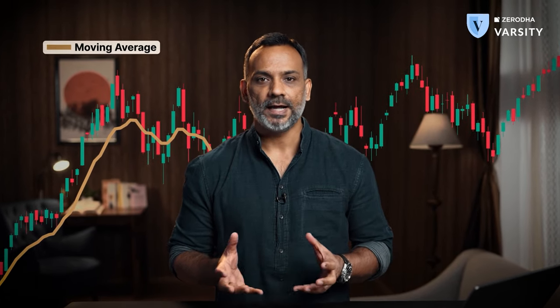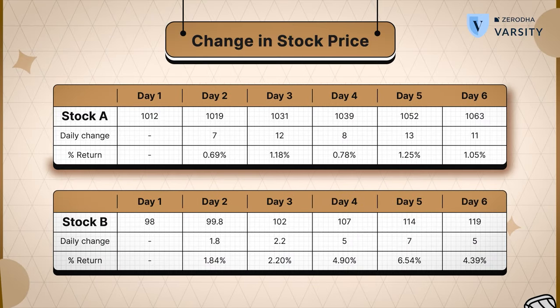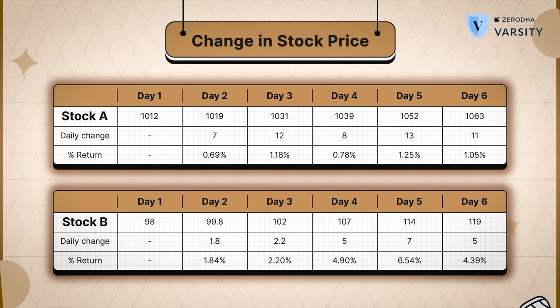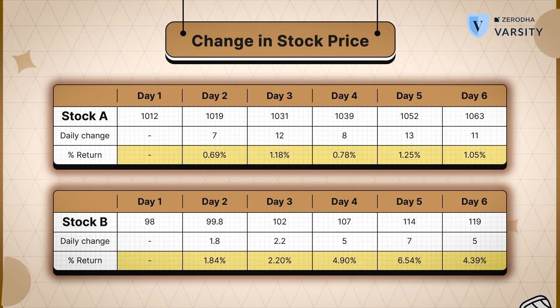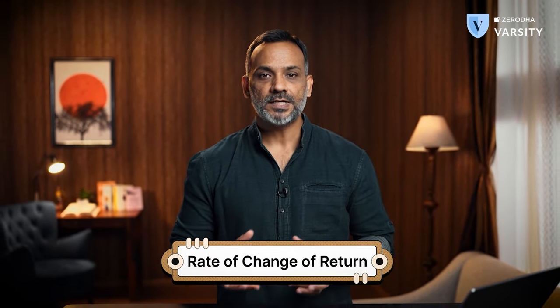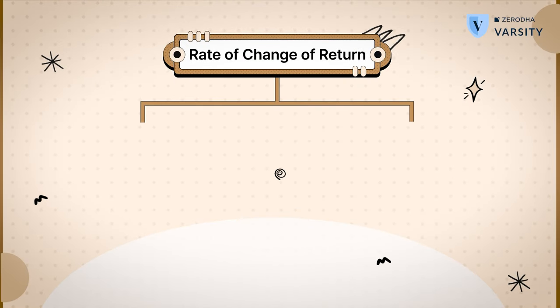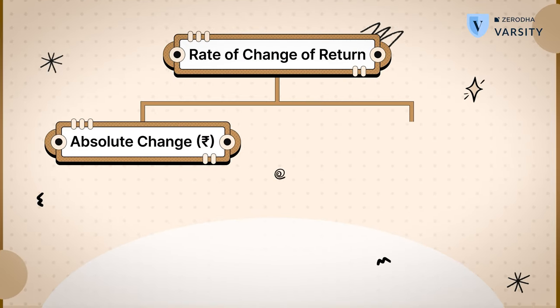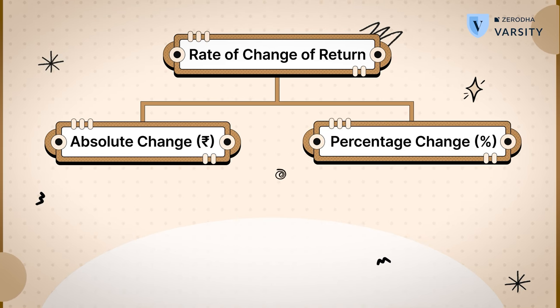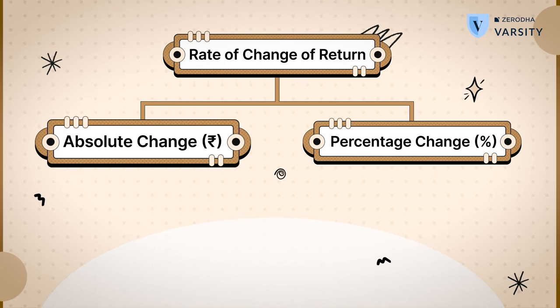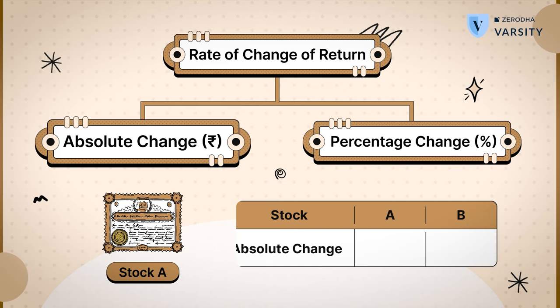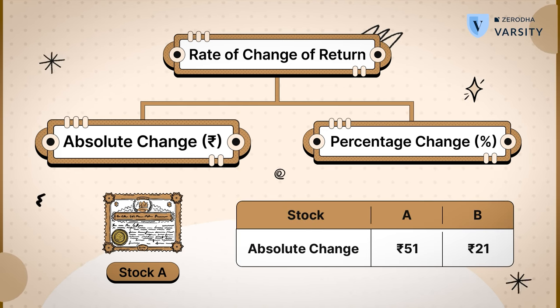One easy way to check for trend is by applying a simple moving average over any stock or index that you wish to trade on. Now, as you can see, both stock A and stock B have trended up and both have put up a positive rate of return. To figure out which stock has better momentum, we need to measure the rate of change of returns. This can be measured in two ways: either the absolute change in rupee terms, or as a percentage change. If you go by the absolute change in rupee terms, stock A is a clear winner — its absolute change is 51 rupees versus 21 rupees for stock B.